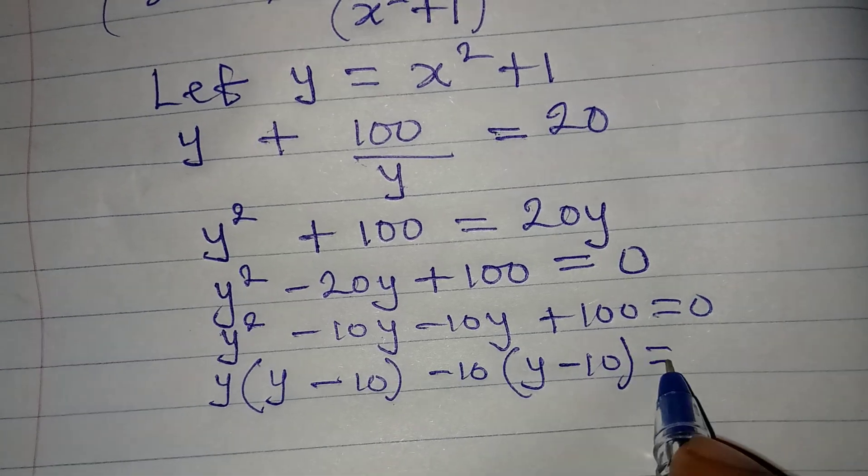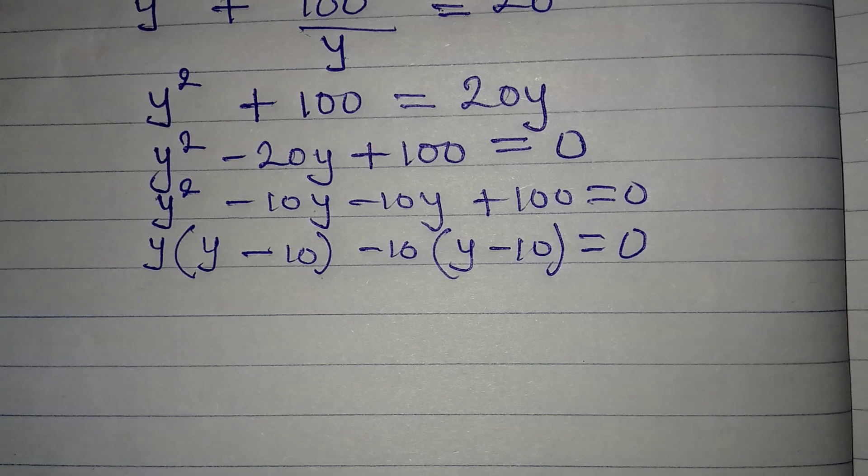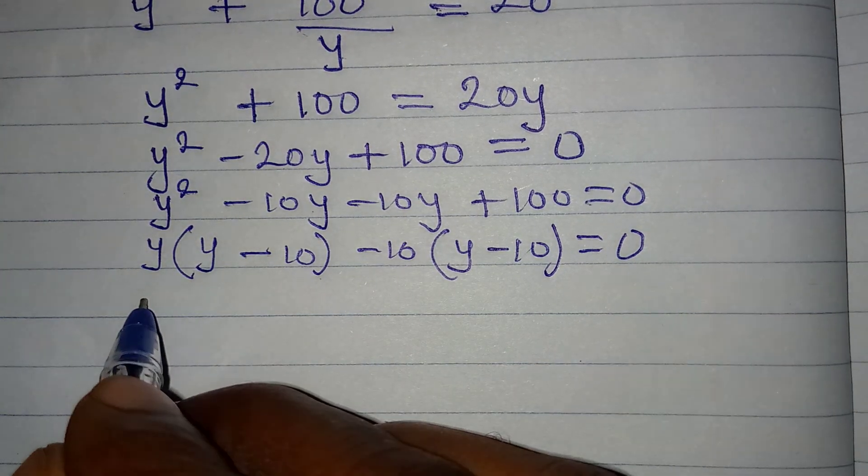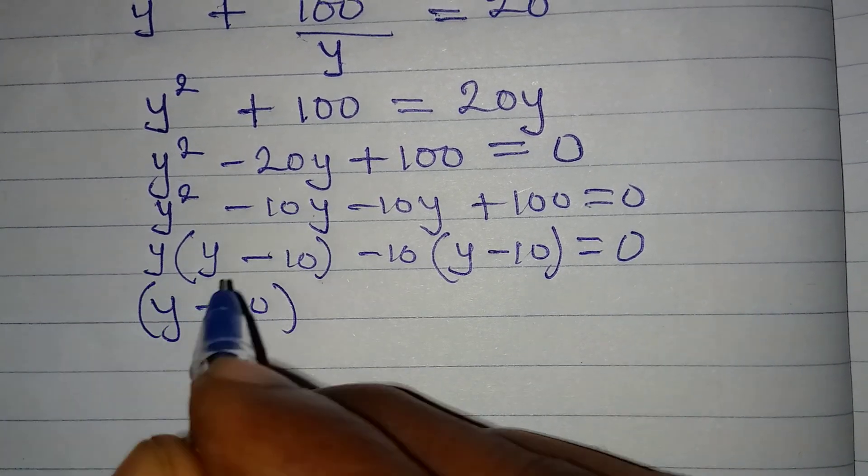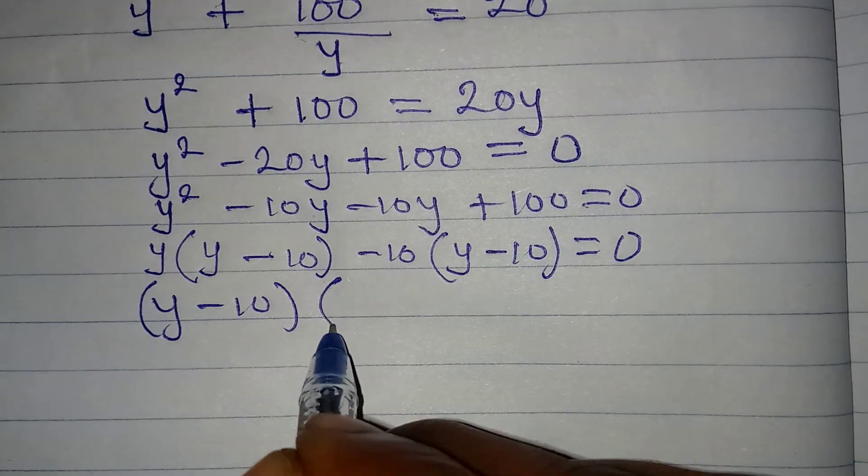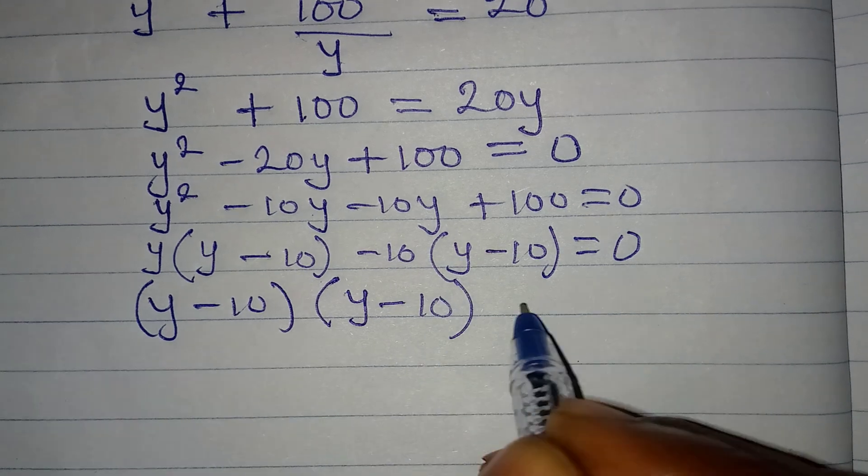Now let's continue. We will pick terms outside of the bracket together, so we have y minus 10. We bring them together, then the one in the bracket will factor out one of them, which will be y minus 10, and this will now be equal to 0.